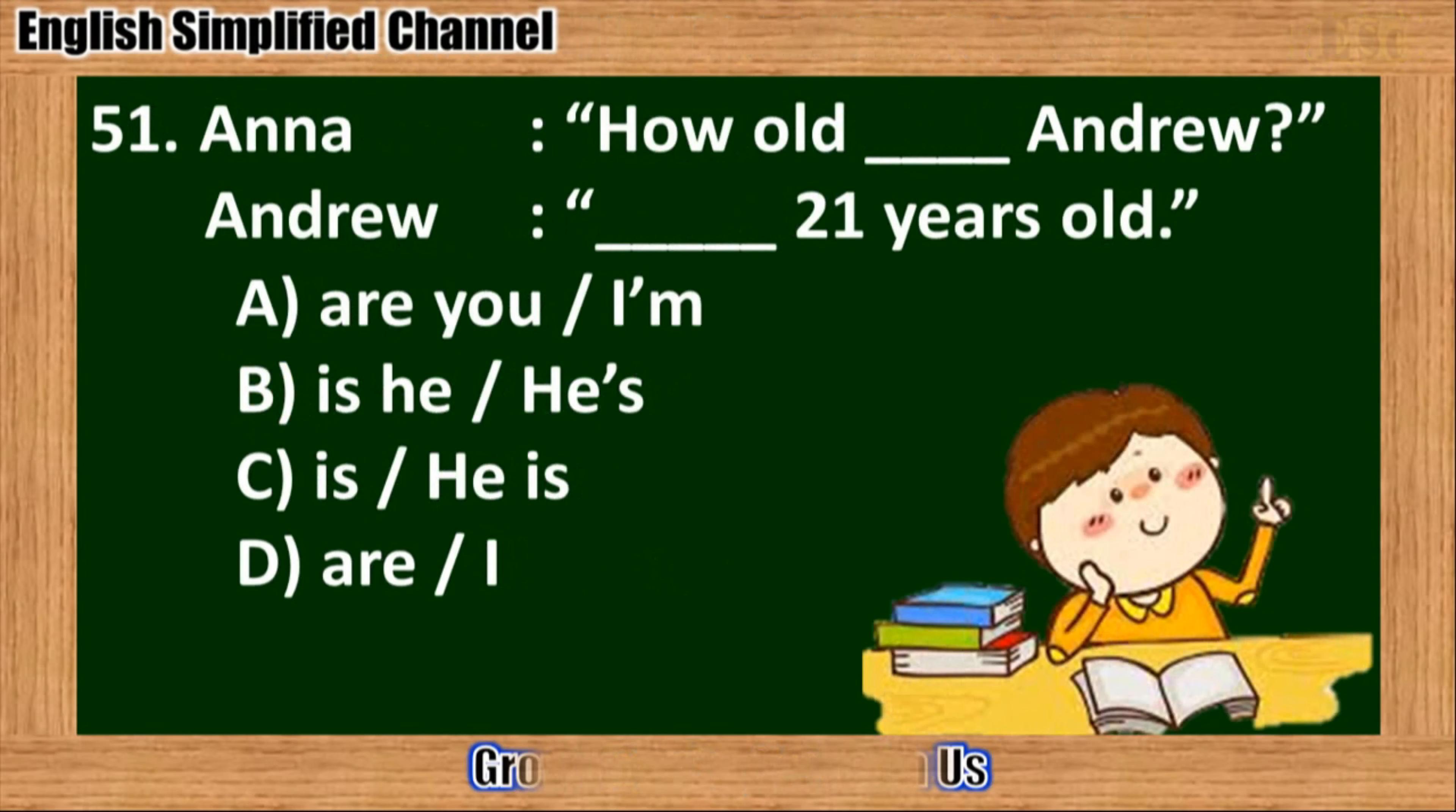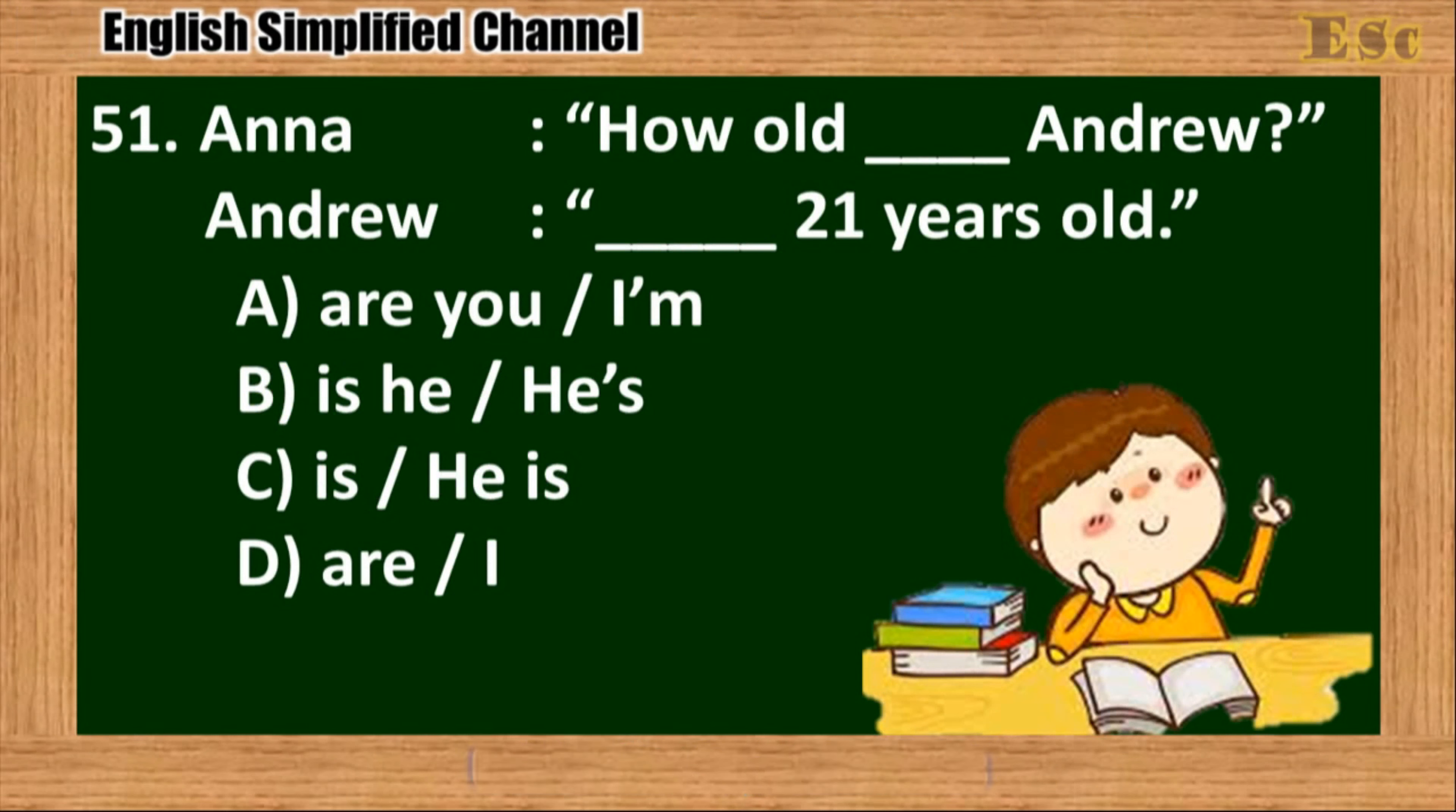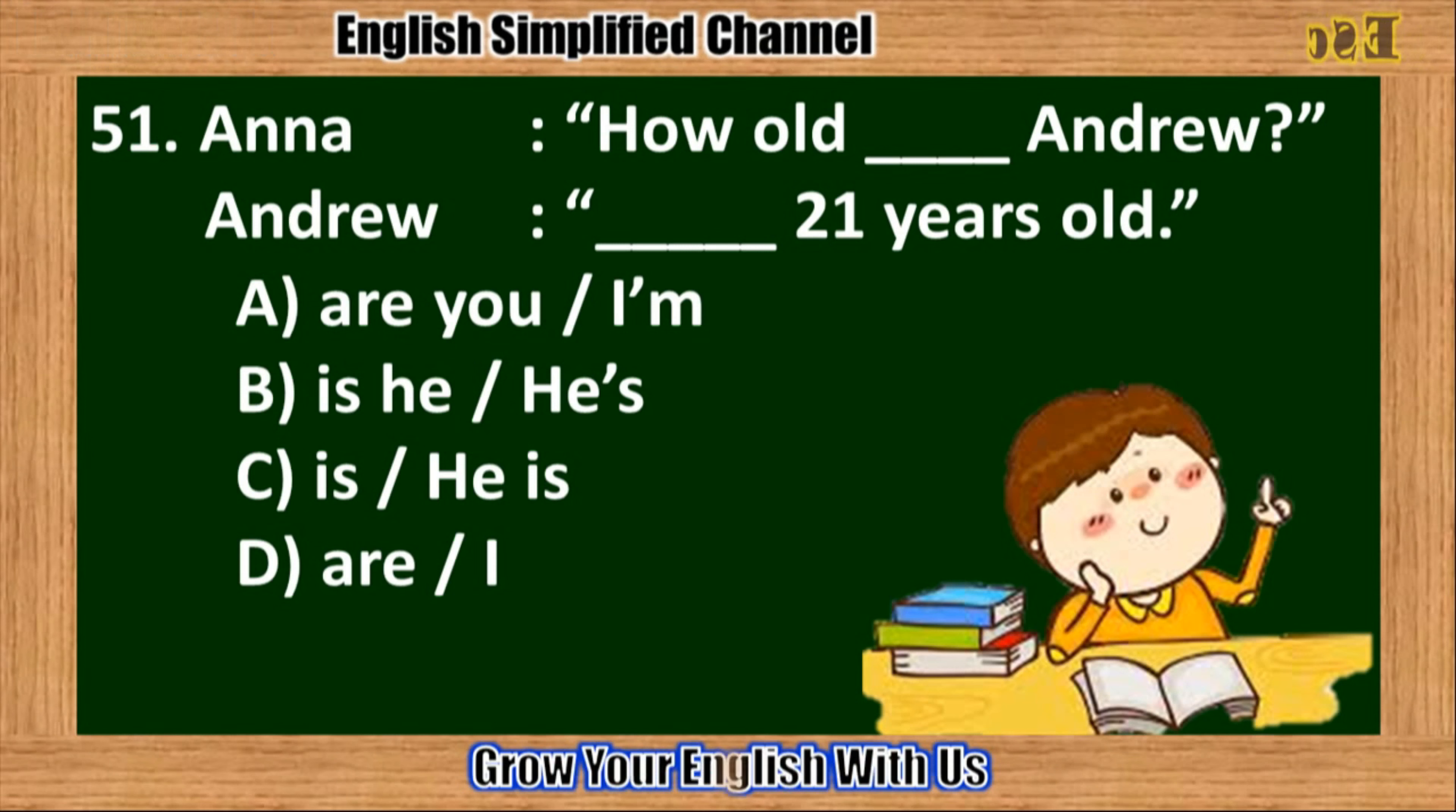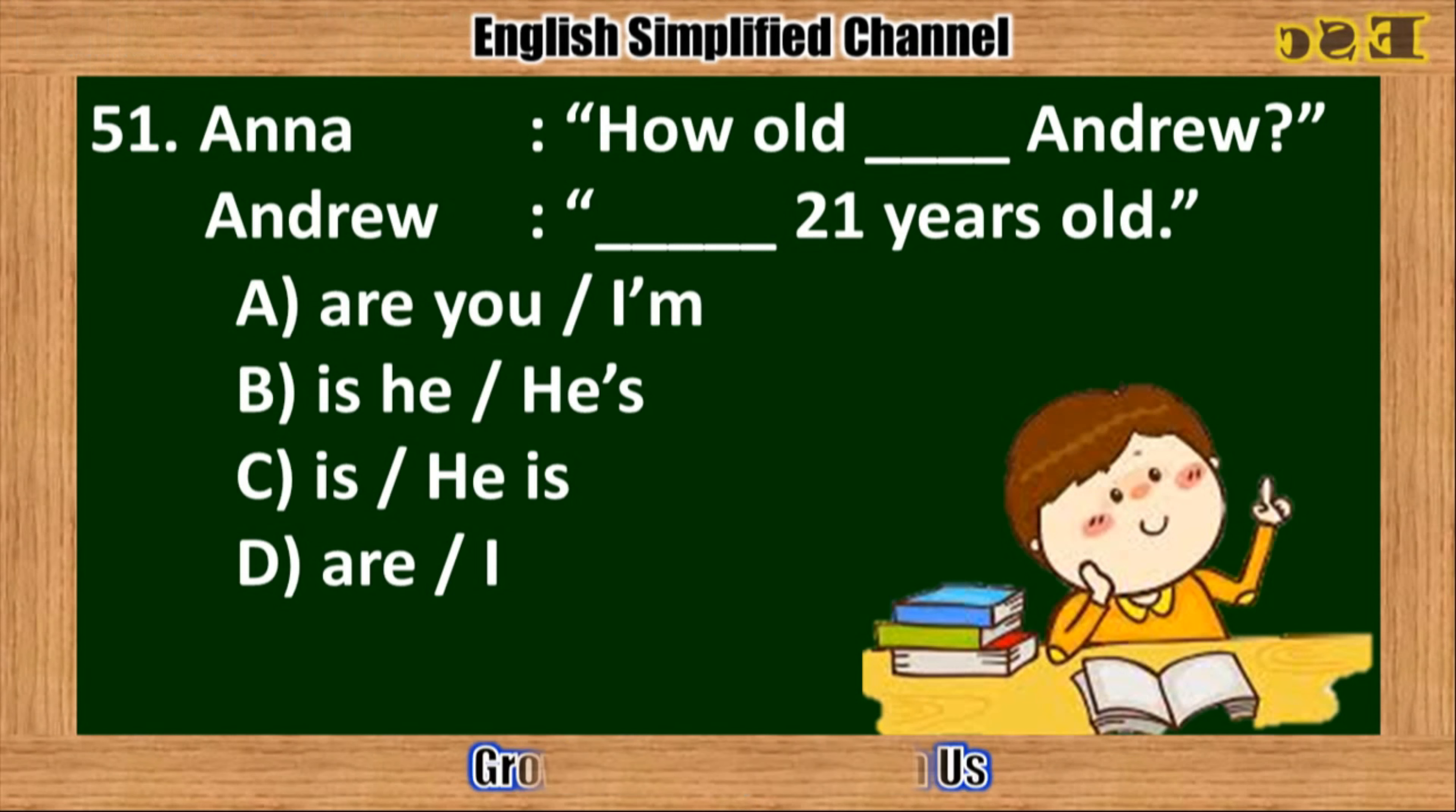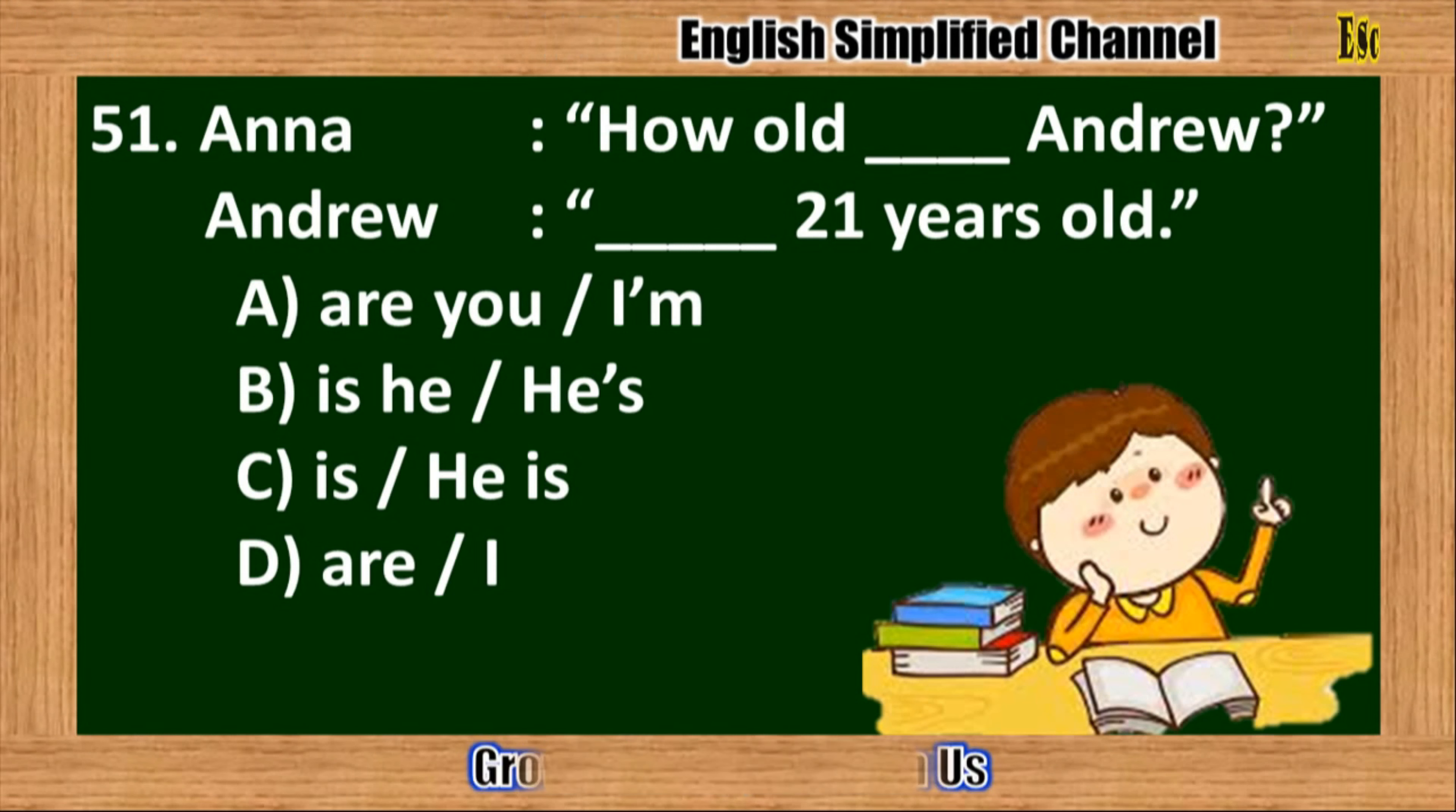51. How old blank Andrew? Blank 21 years old. A. Are you, I'm. B. Is he, he's. C. Is, he is. D. Are I.